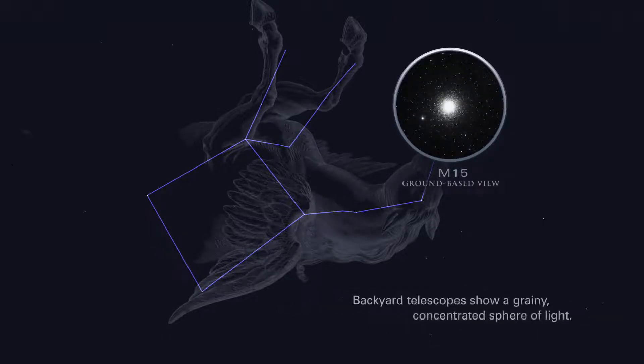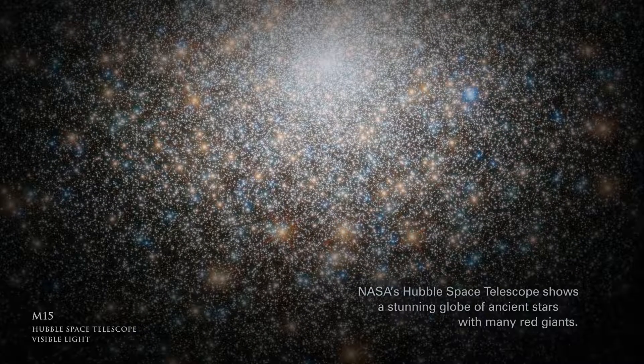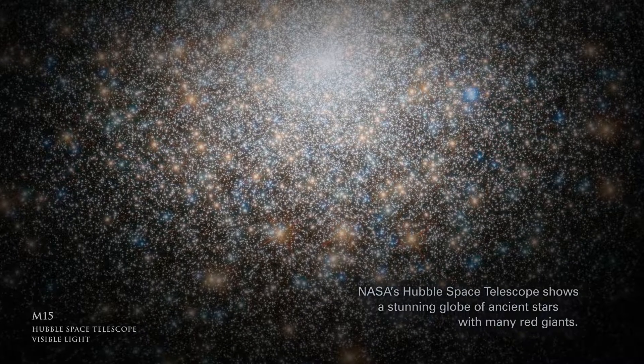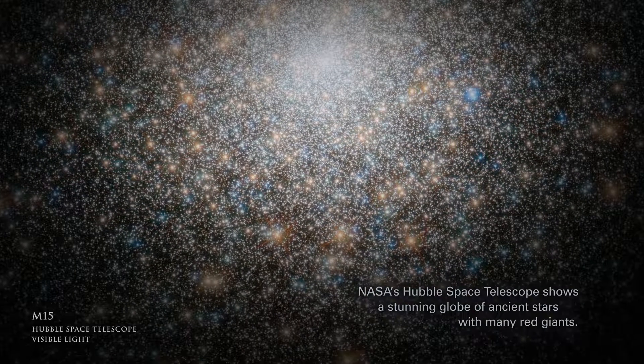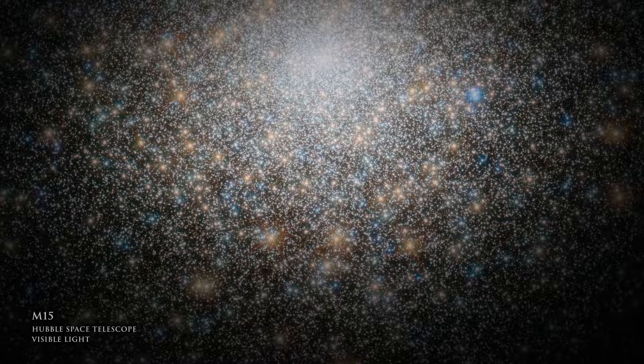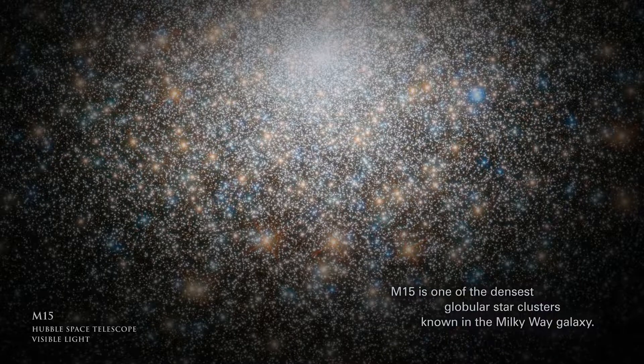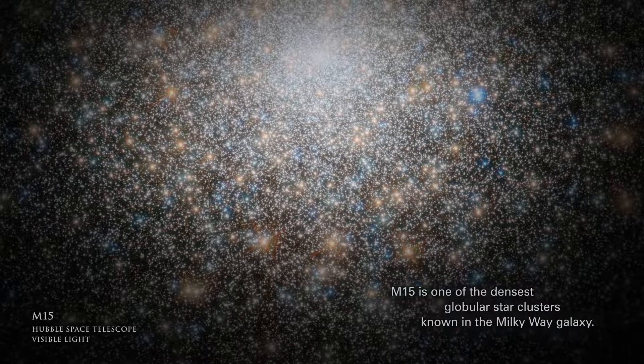Backyard telescopes show a grainy, concentrated sphere of light. NASA's Hubble Space Telescope shows a stunning globe of ancient stars with many red giants. M15 is one of the densest globular star clusters known in the Milky Way galaxy.